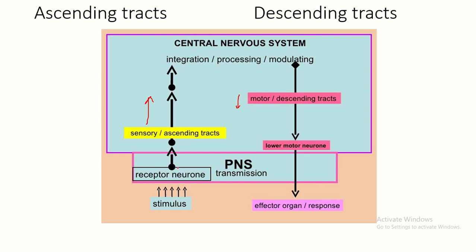The ascending tract receives sensory information. This sensory information is received by receptors, and by using several neurons, these sensory informations ultimately go to the primary sensory area. There are two types of ascending tract: one carries conscious sensation, another carries unconscious sensation. In this video I discuss the conscious sensation.